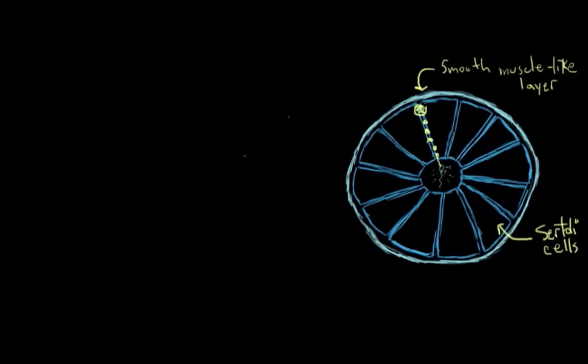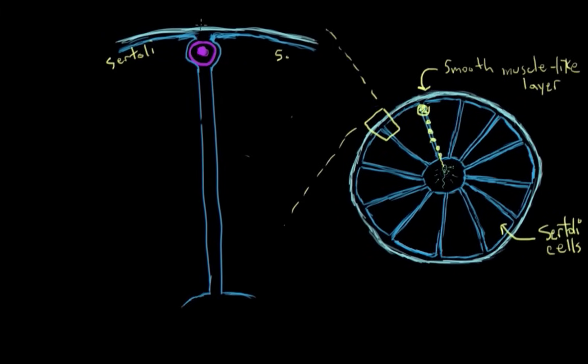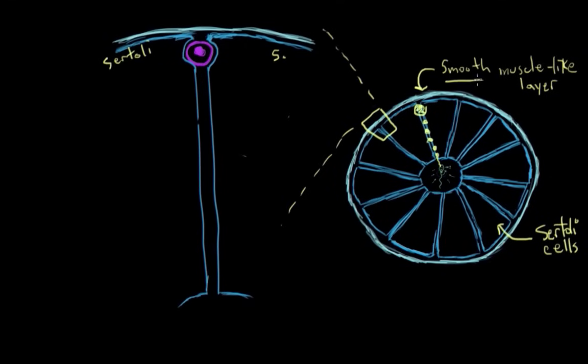We'll zoom in here on this part. We really could pick anywhere along these tubes, because it's all the same process. Let's say this here is a Sertoli cell, and then there's a Sertoli cell on the other side. That light blue bit up top is that smooth muscle layer that does peristalsis.